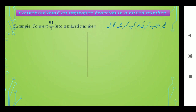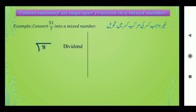اب ہم دیکھیں گے غیر واجب قصر کی مرقب قصر میں تحویل کیسے کی جاتی ہے۔ Example: convert 51 upon 7 into mixed number۔ Conversion of an improper fraction into mixed number — اس میں ہمیں سب سے پہلے 51 کو 7 سے divide کرنا ہے۔